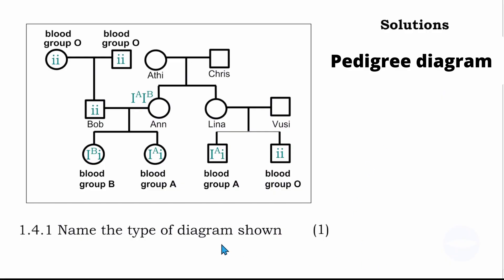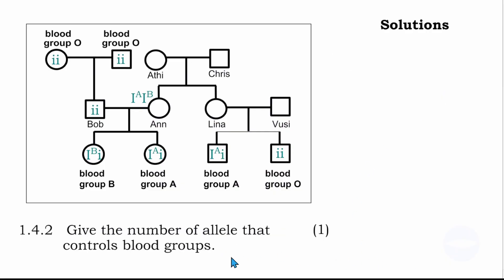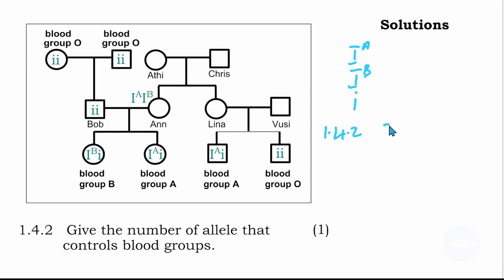The next question asks: give the number of alleles that control blood groups. These are all the alleles that determine the blood group — capital I superscript A, capital I superscript B, and small letter i. Therefore, the answer is 3.